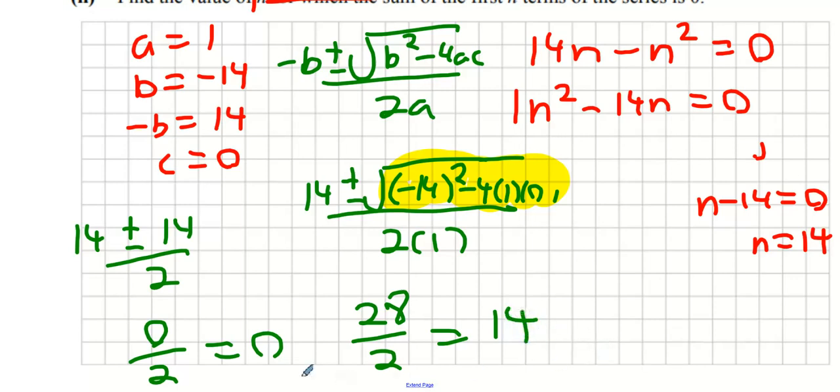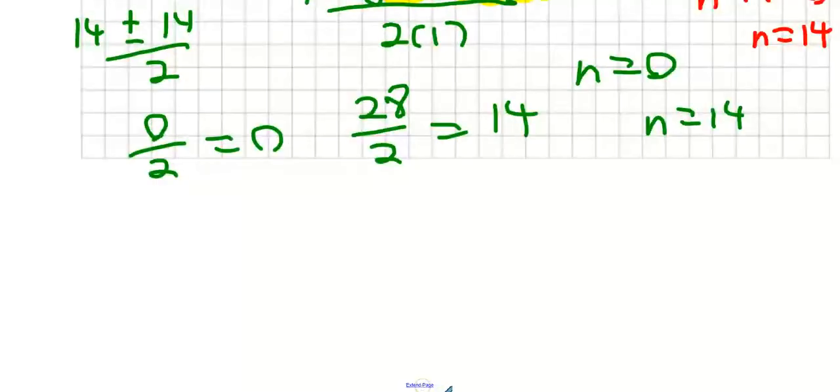Hence the two answers n equals zero or n equals 14. Now please remember sequences always start off at T1, they do not start off at T0. This means n can never be zero, okay that's it.